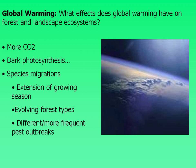Global warming also has an effect on species migrations. In areas that warm up, species are able to move into areas they previously could not due to climate. The same way humans were able to move from Asia across the Bering Strait when things were warmer and more land was exposed, the same goes for plants. As the climate warms, forest types evolve as more species enter — some considered invasive — because the climate is now conducive for them. You also end up with more frequent pest outbreaks.